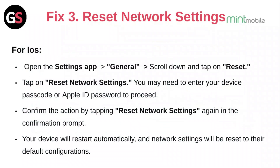Fix 3: Reset network settings. For iOS, open the Settings app, then General, then scroll down and tap on Reset. Tap on Reset Network Settings. You may need to enter your device's passcode or Apple ID password to proceed. Confirm the action by tapping Reset Network Settings again. Your device will restart automatically and network settings will be reset to their default configurations.